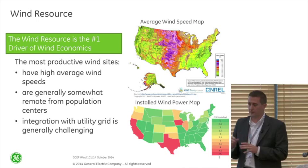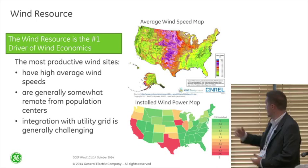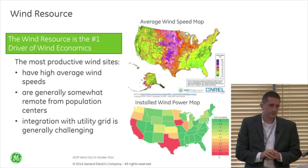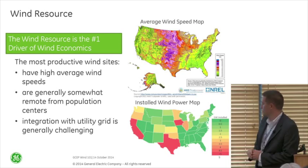I also overlaid the installed wind map. The red color is where you get the most wind installed. You see a lot of wind installed in California, Texas, and Iowa. Texas and Iowa make a lot of sense because they're right in the middle of that great wind resource. In California and the west coast it also looks pretty good.